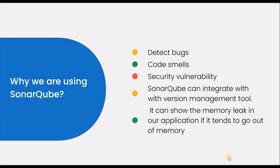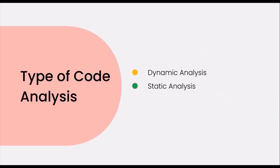Next, the types of code analysis SonarQube uses. There are two types: static and dynamic analysis. Static code analysis is done without executing any code — it is a collection of algorithms and techniques to automatically find potential issues from source code and poor coding practices. Static code analysis is also considered an automated code review process, detecting errors and making recommendations on code formatting.